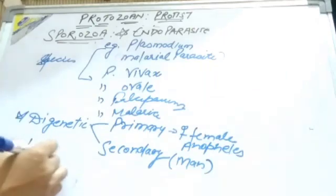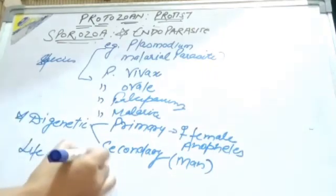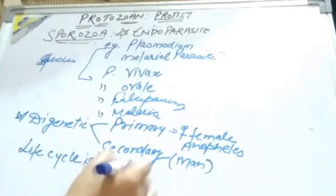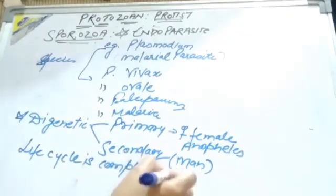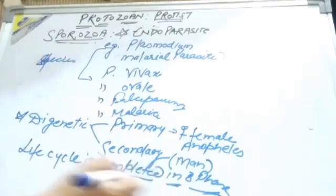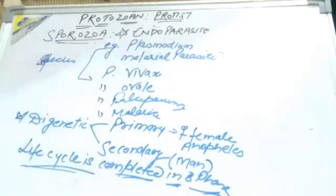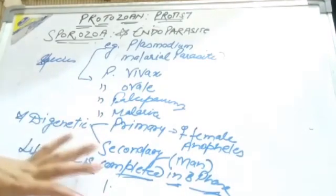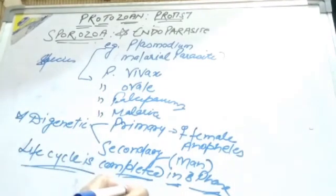The life cycle of Plasmodium is completed in three phases.